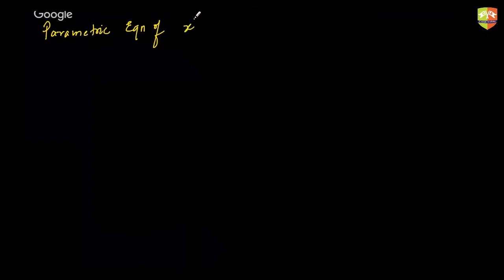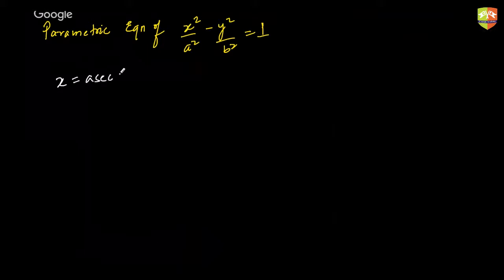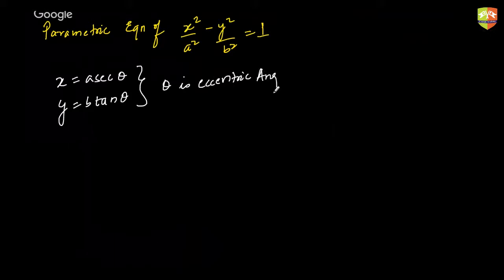Next is the parametric equation of a hyperbola: x²/a² − y²/b² = 1. The parametric form is x = a·secθ and y = b·tanθ, where θ is a parameter also called the eccentric angle.